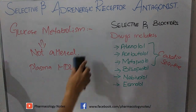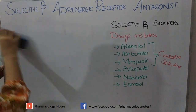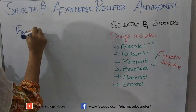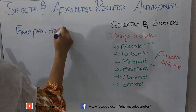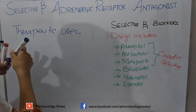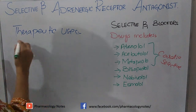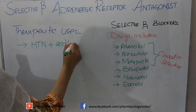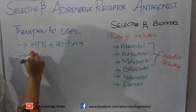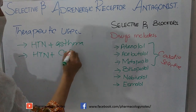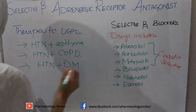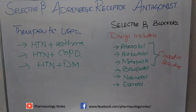The therapeutic uses of these drugs include: hypertension in patients who are also suffering with asthma or COPD, and hypertension in patients with diabetes mellitus, where propranolol cannot be used due to its effects on glucose metabolism and bronchoconstriction.